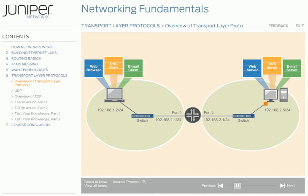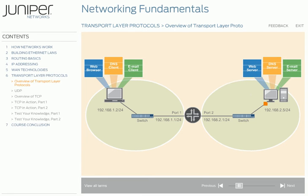But what happens then? A computer will most likely have more than one application program running. So once the data arrives, how does it get to the correct application? Nothing in the IP header identifies which application program on the computer should receive the data. And once the data is sent, how does the sending computer know that the data arrived successfully and in the correct order? In this section, we'll answer all these questions.